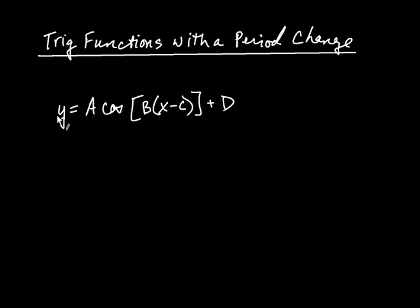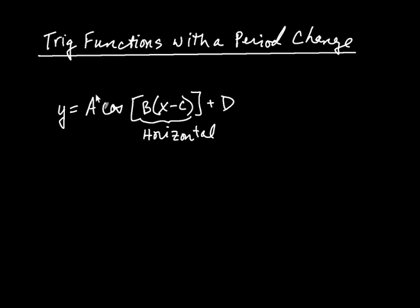This looks kind of complicated right now, but all of these numbers — A, B, C, and D — they're all going to have meaning. Anything that happens inside the brackets affects horizontal transformations, so this is going to affect your graph horizontally. And anything on the ends, either the A or the D, that's going to give you vertical transformations. So what's inside the brackets is horizontal, and the A and the D affect vertical transformations. This is going to be our template.